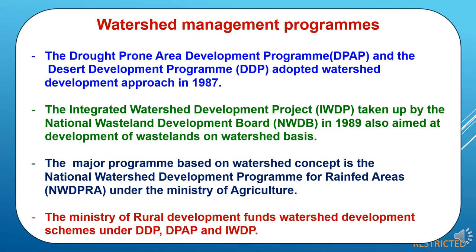Now we will study different watershed management programs. First, the Drought Prone Area Development Program (DPAP) and the Desert Development Program (DDP) adopted a watershed development approach in 1987. Second, the Integrated Watershed Development Project (IWDP) was taken up by the National Watershed Development Board (NWDP) in 1989, aimed at development of watershed on a watershed basis. Third, the National Watershed Development Program for Rain Fed Areas (NWDP) under the Ministry of Agriculture, and watershed development schemes under DDP, DPAP and IWDP funded by the Ministry of Rural Development.